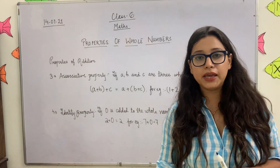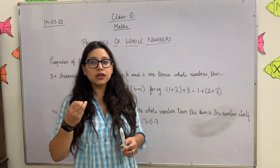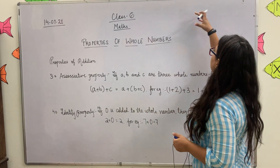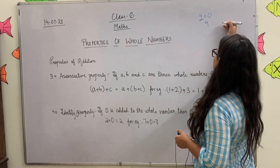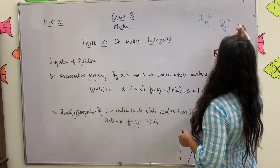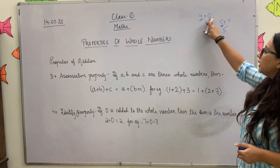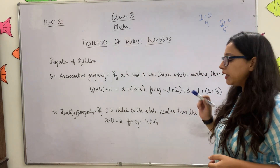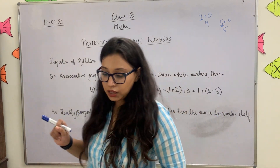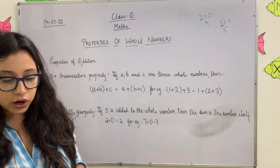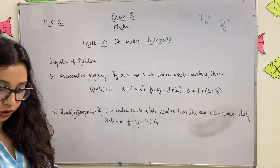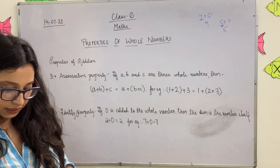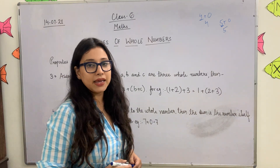Identity property says that if you add 0 to any whole number, the answer will be that number itself. For example, 4 plus 0 is 4, and 5 plus 0 is 5. So today we have done 4 properties of addition of whole numbers. Note it down in your fair register, everyone, and send your work by 2 PM. We will start the exercise tomorrow. Bye-bye and take care!